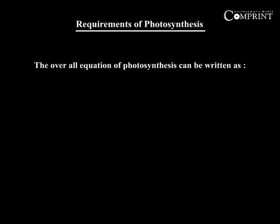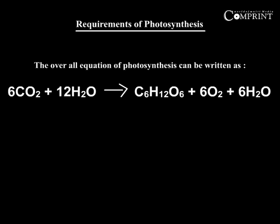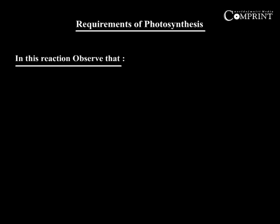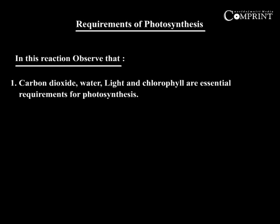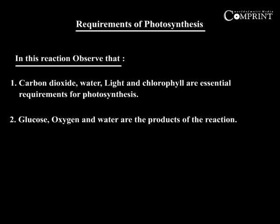The overall equation of photosynthesis can be written as: 6CO₂ + 12H₂O → C₆H₁₂O₆ + 6O₂ + 6H₂O. In this reaction, observe that carbon dioxide, water, light, and chlorophyll are essential requirements for photosynthesis. Glucose, oxygen, and water are the products of the reaction.